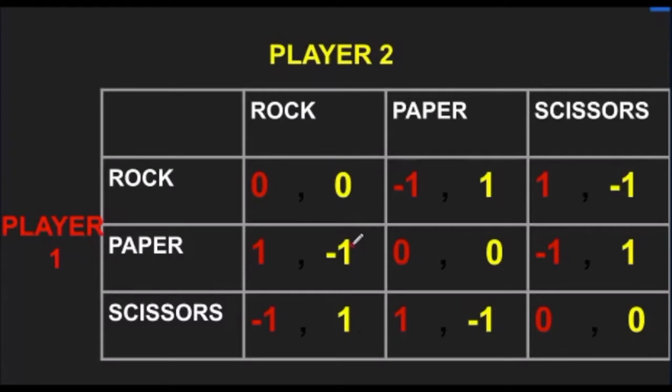This is the expected payoff of the game. The two players, player 1 and player 2, have three strategies: either to choose Rock, Paper or Scissors.